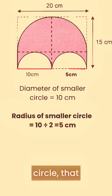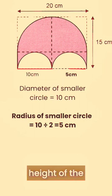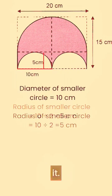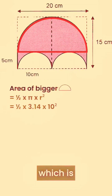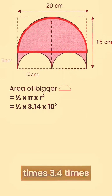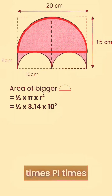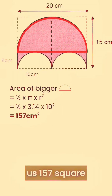Since we know the radius of the smaller circle, we are able to build the height of the semicircle. First, we start with getting the area of the bigger semicircle, which is basically half times 3.4 cm. And this gives us 157 cm².